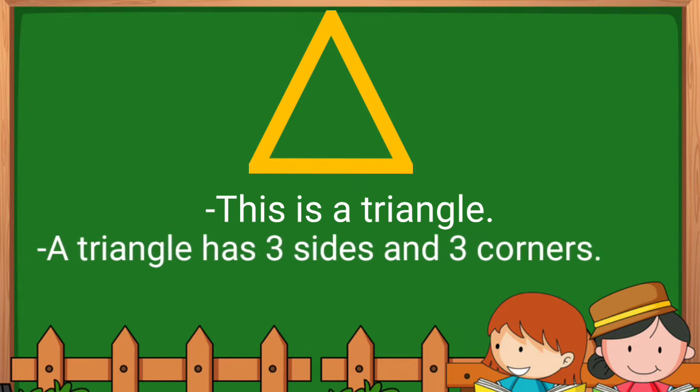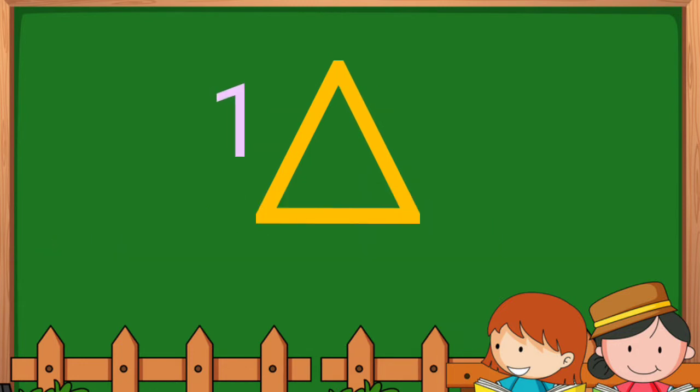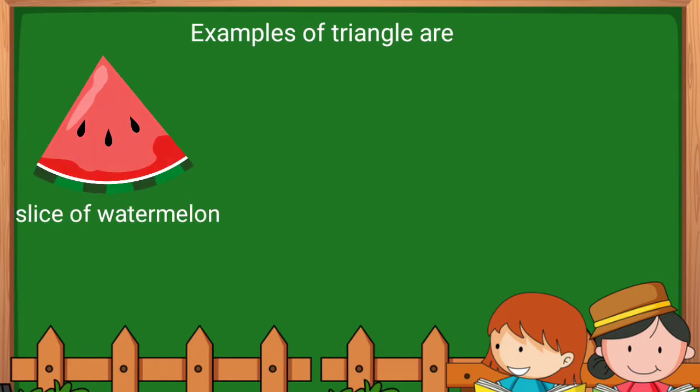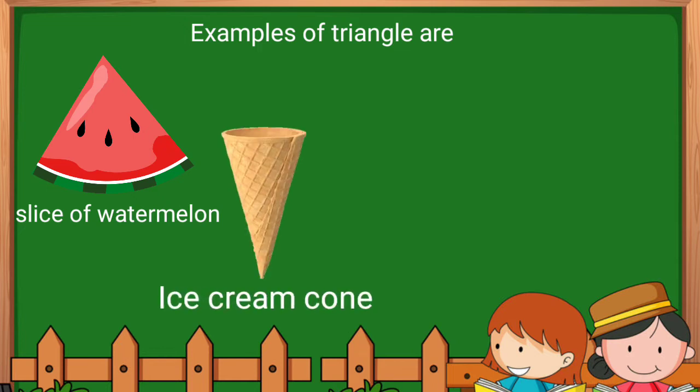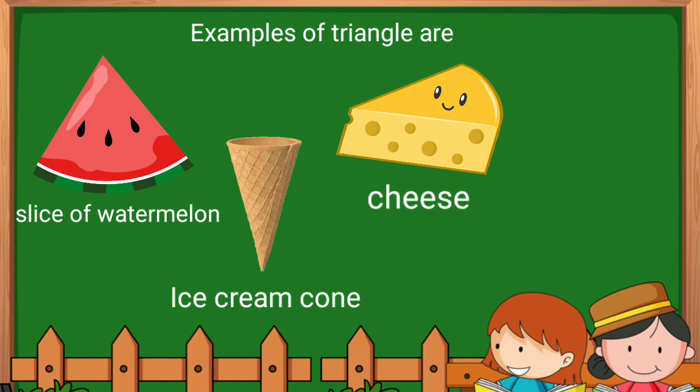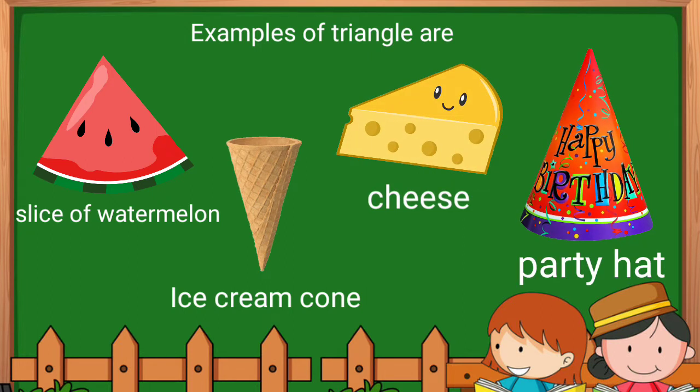A triangle has three sides and three corners. Let's count: one, two, three - three sides. Examples of triangle are slice of watermelon, ice cream cone, cheese, party hat. These are all examples of triangle.